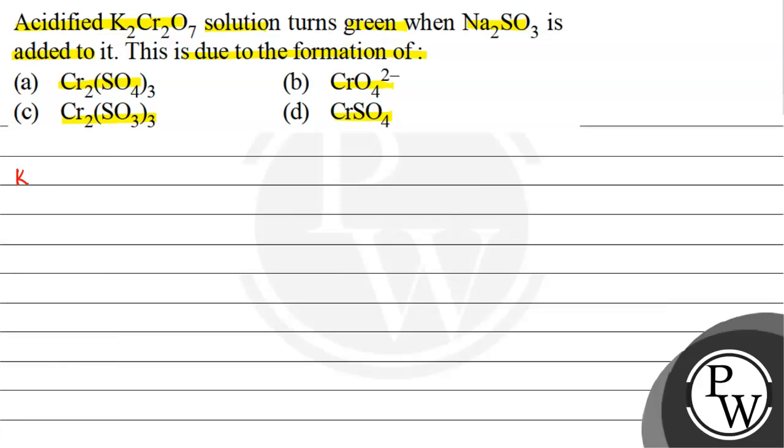Let us write the key concept of the question. First, to see the formation of color in d-block elements, they have partly filled d-orbitals.